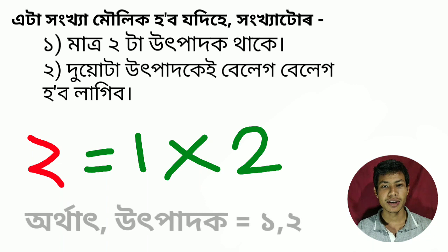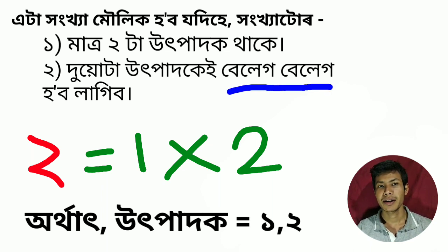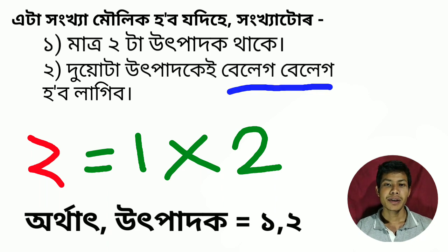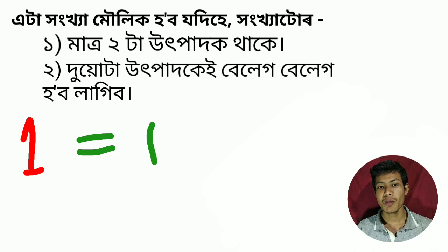Kutuke aami dhuta uutpaadok palu. Or thart ehtasa unikko — eta dunik uutpaadok hompooreno belek belek yata one, two oto meeta oto meeta kali thaakke. Aaru antohol dhu kutuke aami dhuta uutpaadok bishlekhon kori, kutuke aami dhuta.